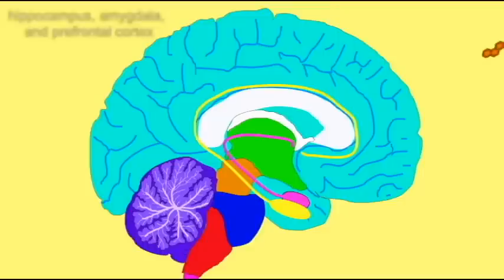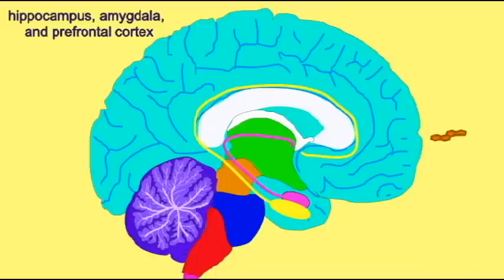For example, regions of the brain express receptors for glucocorticoids, such as the hippocampus, amygdala, and prefrontal cortex.